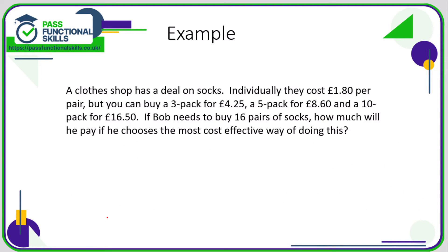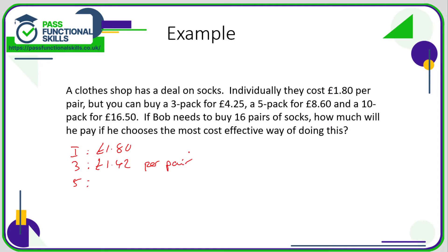Let's look at another example — a deal on socks. Individually they're £1.80. In a three-pack for £4.25, that's £4.25 divided by 3, which comes to about £1.42 per pair. A five-pack for £8.60 works out as £8.60 divided by 5, which is £1.72 per pair — so that's more expensive than the three-pack.